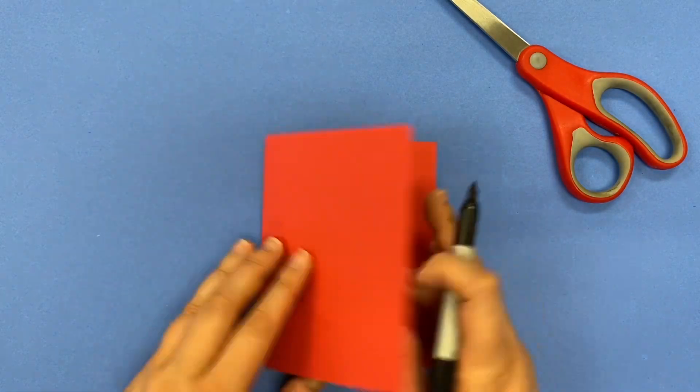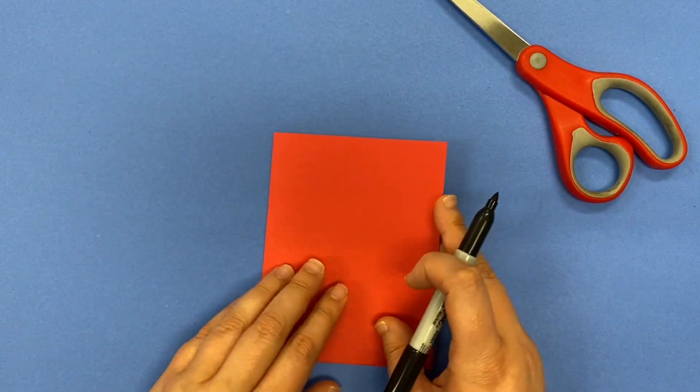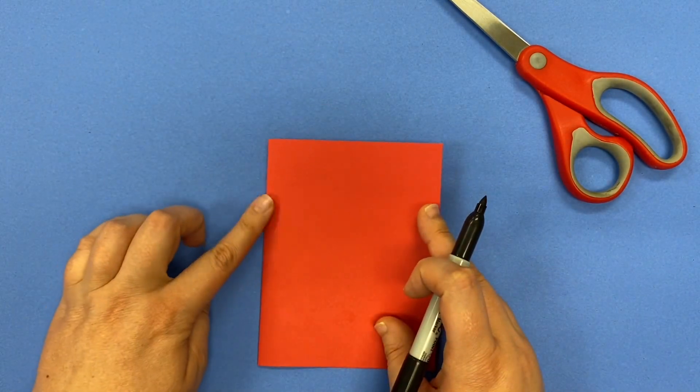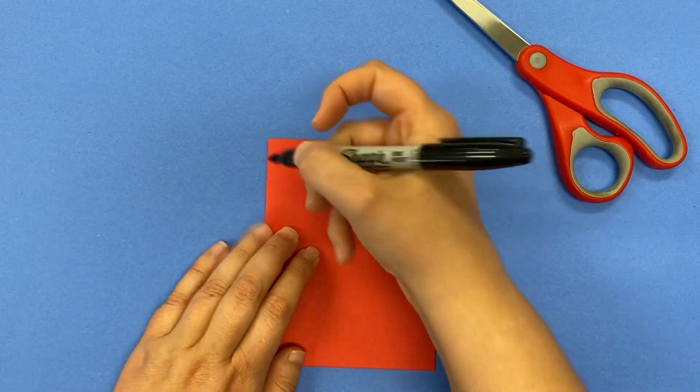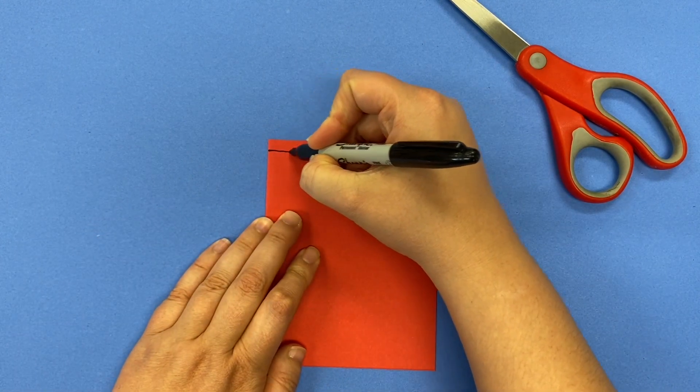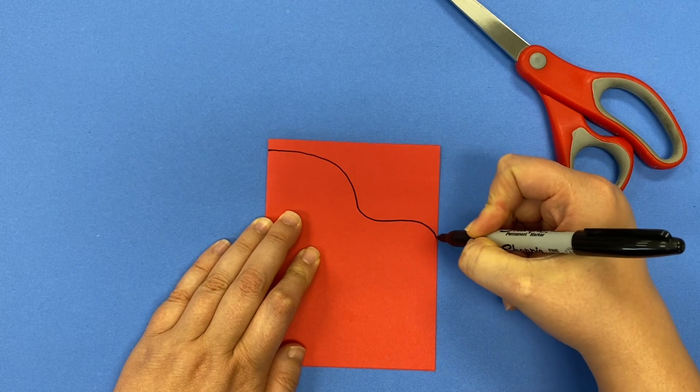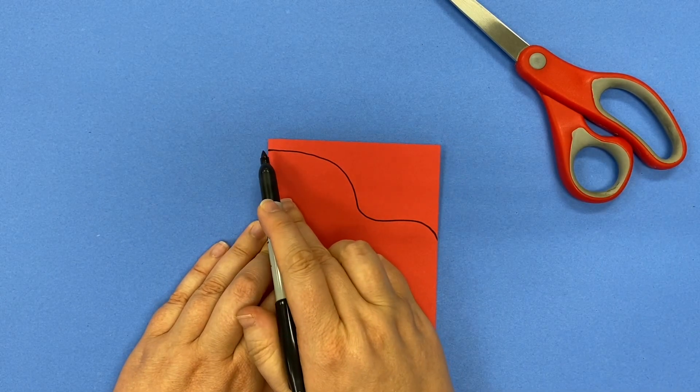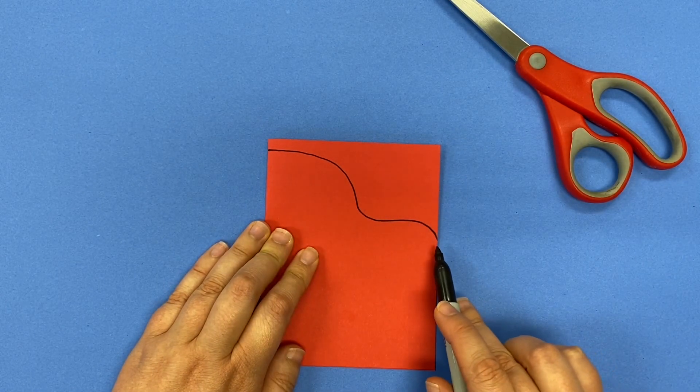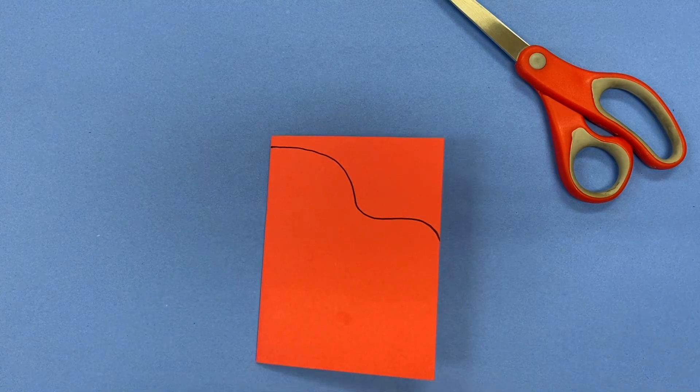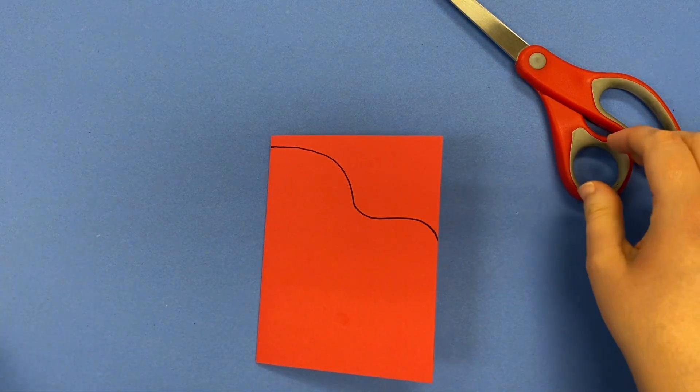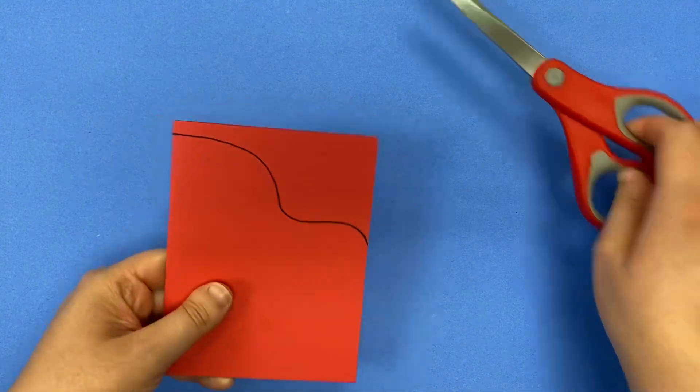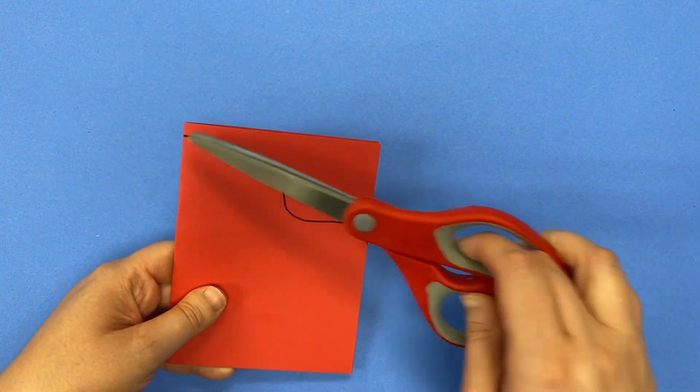So I've got my fold kind of like a book where the fold line is on this side and I need to draw some kind of interesting line from the top corner down to the side. It can be straight, it can be curvy, it is up to you. And then I'm going to cut that line.